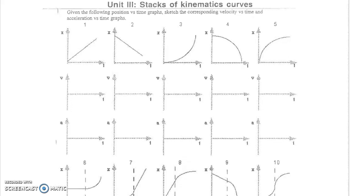Our position versus time graph shows that the object has a constant slope, which means our change in position is the same amount for every unit of time. Our displacement is the same, and our position is getting bigger and bigger at a constant rate. So our velocity is going to be positive with a constant value — that's a straight flat line with some constant positive value. Since velocity is constant, acceleration is zero, because acceleration is a change in velocity over time.